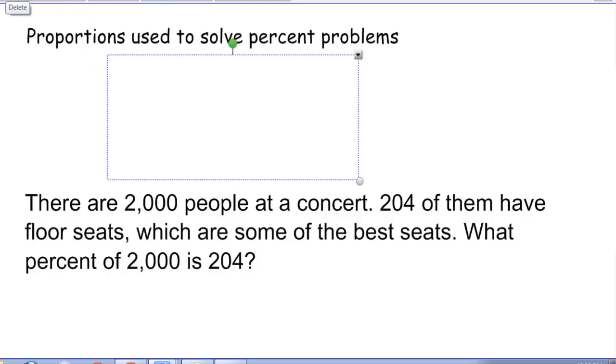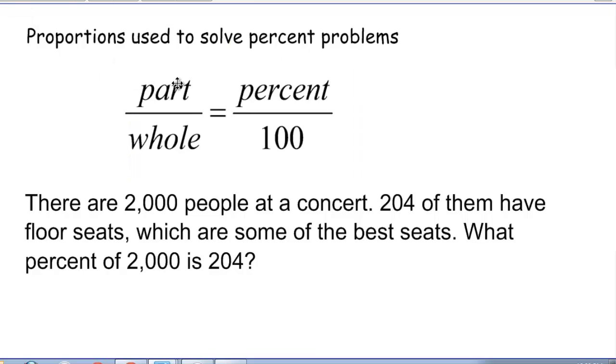When I solve a percent problem using a proportion, I want to set it up this way: part over whole equals the percent number over 100. Leaving the percent number as the number, because remember percent means out of 100, so this is really just the ratio that's equal to that percent.